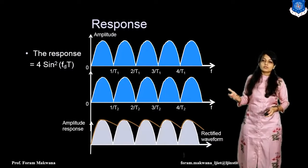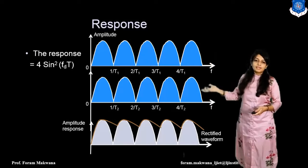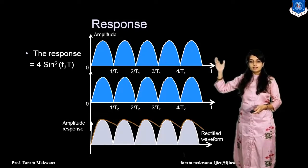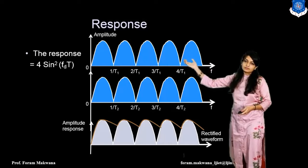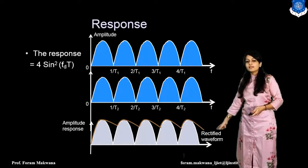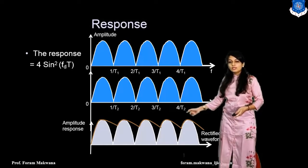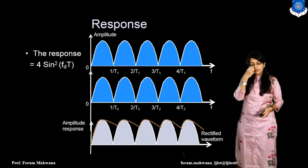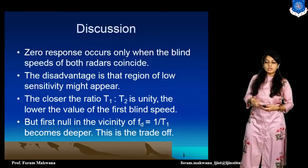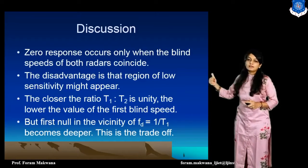Now, what is the response of the MTI radar? At the output of the filter, the response is 4 sin² (Fd × T). This is the amplitude response and this is the rectified waveform — it gives only positive spikes, so we are getting only a unipolar waveform. Zero response occurs only when the target is moving at the blind speed.